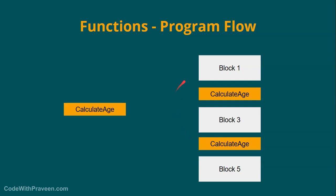In our case, we have block one and then we call the function calculate age, then certain other blocks dealing with some other logic. And then if you want to calculate the age again, instead of repeating, we just call the function again here, followed by execution of some other blocks. So we have defined the function once but can use it any number of times within our program.